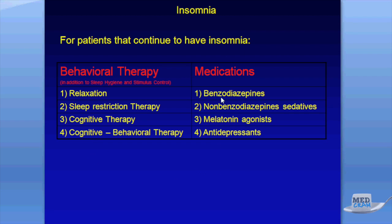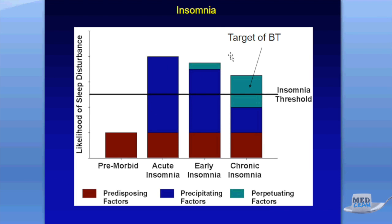Medications we'll discuss in a later lecture include benzodiazepines, non-benzodiazepine sedatives, melatonin agonists, and antidepressants. The purpose of behavioral therapy — recognizing this graph — is that in the pre-morbid state we had predisposing factors throughout our lifetime. Precipitating factors would take us over the insomnia threshold, and even when they subsided, perpetuating factors we unwittingly instituted kept us in a state of insomnia. Behavioral therapy targets those perpetuating factors.